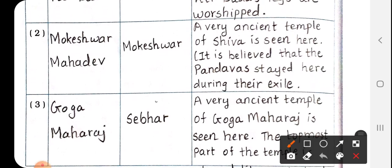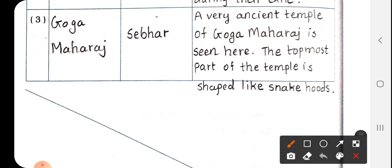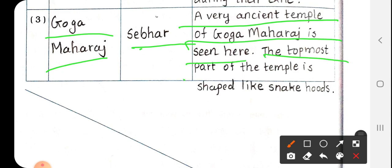Number 2: Mokeshwar Mahadev, located at Mokeshwar. Specialty: a very ancient temple of Shiva is seen here. It is believed that the Pandavas stayed here during their exile — Pandava apne vanvas ke dauran yahan rahe the. Number 3: Goga Maharaj Temple, located at Shri Bar. Specialty: a very ancient temple of Goga Maharaj is seen here, and the topmost part of the temple is shaped like a snake hood.